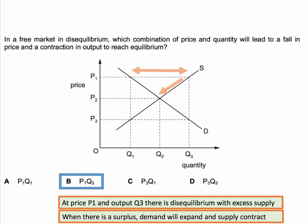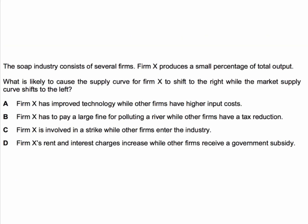Let's test yourself on the third question in this little set. The soap industry consists of several firms, and Firm X produces only a small percentage of total output. What is likely to cause the supply curve for Firm X to shift to the right, whilst the market supply curve — consisting of the other soap producers as well as Firm X — shifts to the left? Press the pause button, have a go, and come back when you want to know the answer.